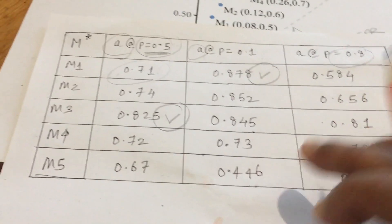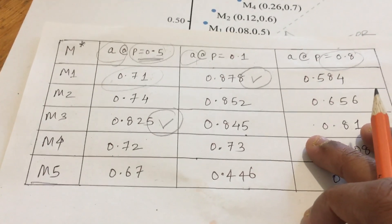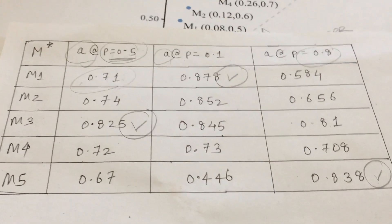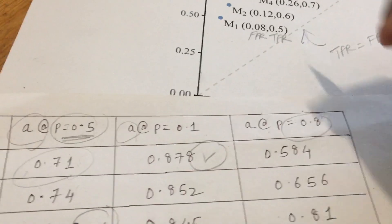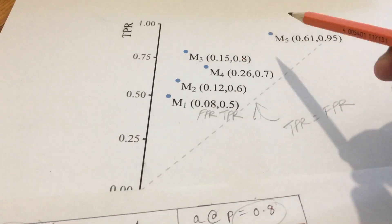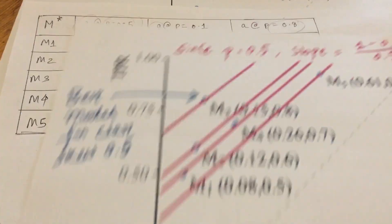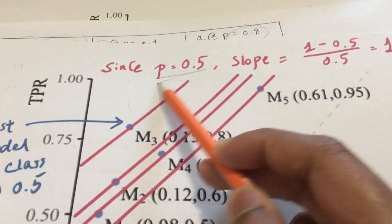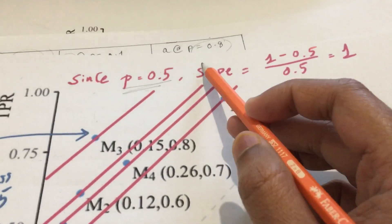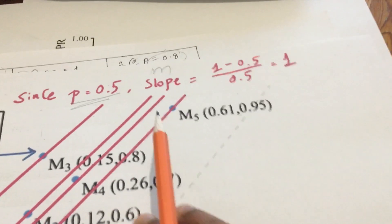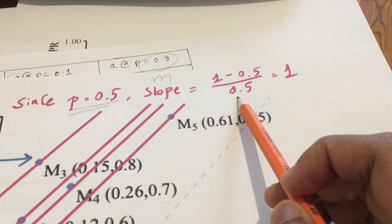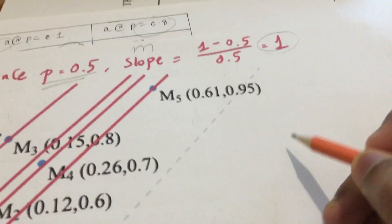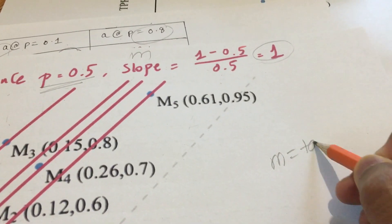That's the math part we did from calculating the equation. Now how we plot the lines on the graph. For P equals 0.5 we need to calculate the slope, that is M. This slope is given by (1-P)/P, so you get the slope as 1.